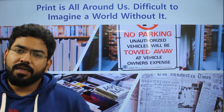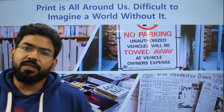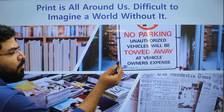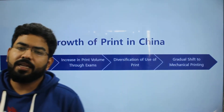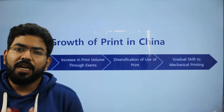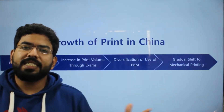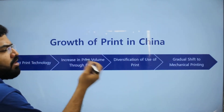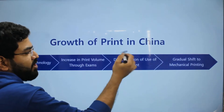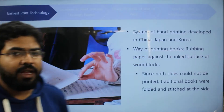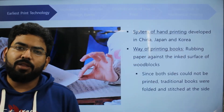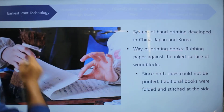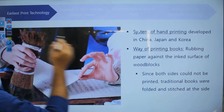But a few centuries ago, that wasn't the case. The first sign of print was not found in western civilization — it was found in the eastern civilizations of China and Japan. The print culture actually started in China, where the main method of printing was hand printing.